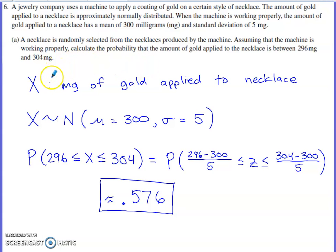So I just defined a random variable here. I said capital X is going to be the milligrams of gold applied to the necklace. They tell us that X is normally distributed with a mean of 300, a standard deviation of 5. I want to know what the probability is that X is between 296 and 304. What you would want to do is you would want to show the computation of a Z score. So if I'm going from 296 milligrams to a Z score, I would take that value of X, subtract the mean, divide by the standard deviation. I've done something similar here for the 304 milligrams. I went to a normal CDF computation on my calculator and got a probability of 0.576.